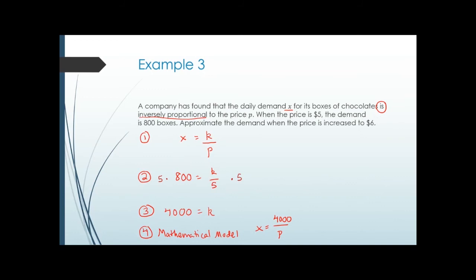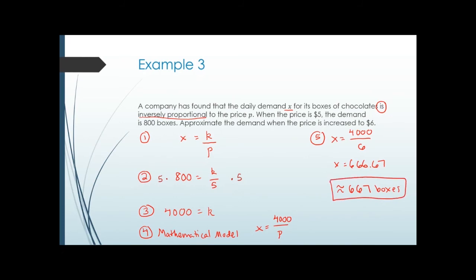Step five: approximate the demand when price is $6. Plug in p equals 6: x equals 4000 over 6, which is approximately 666.67 — so about 667 boxes. Notice that when the price increased, the demand went down. That is the hallmark of inverse variation: when one thing increases, the other decreases. In direct variation, both tend to increase or decrease together.